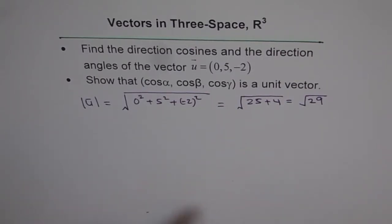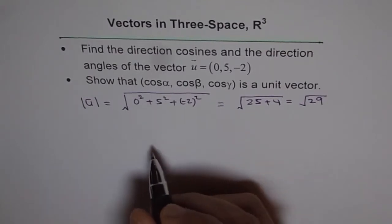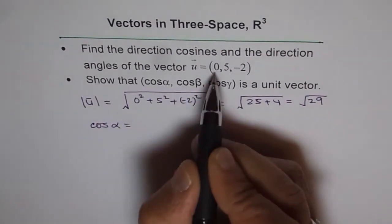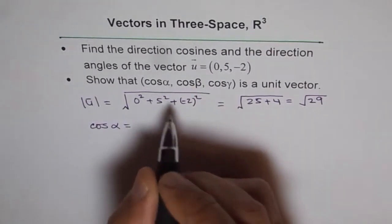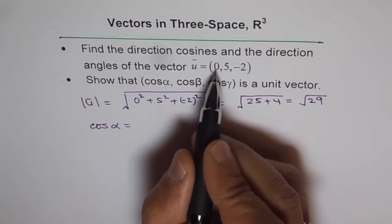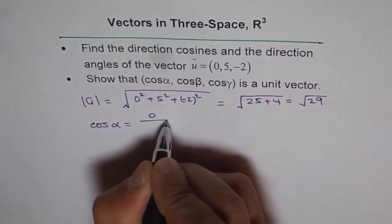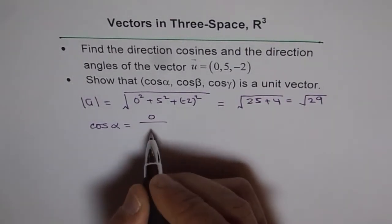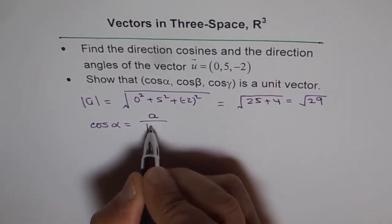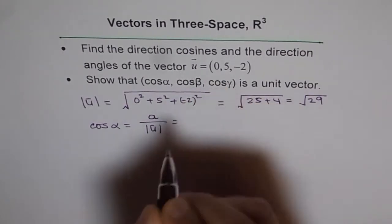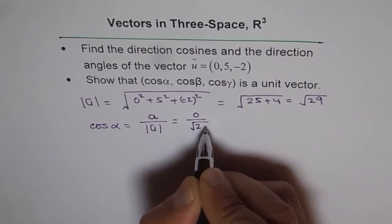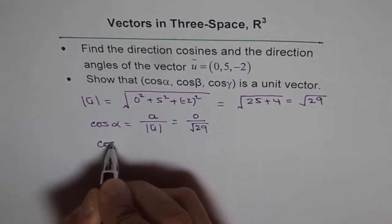To find the direction cosines, we will use the formula as we derived. So cos α is — what is the direction number? The number is 0, so A = 0 for us. The formula is cos α = A / |u|. So, 0 over √29. That is our cos α.